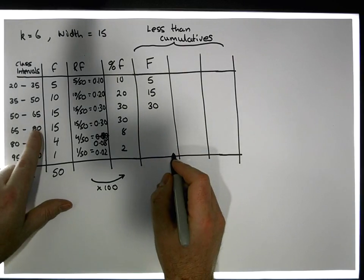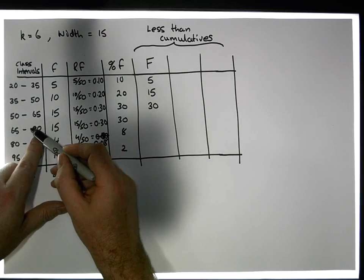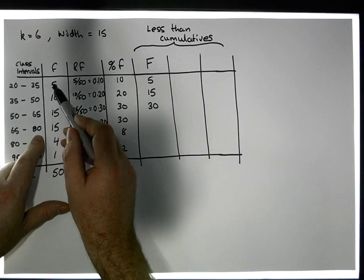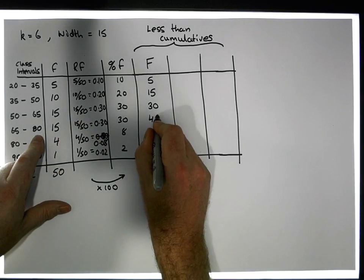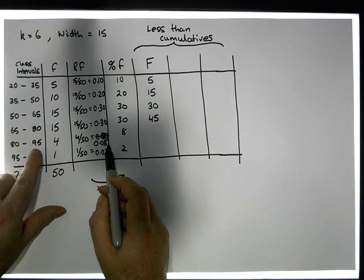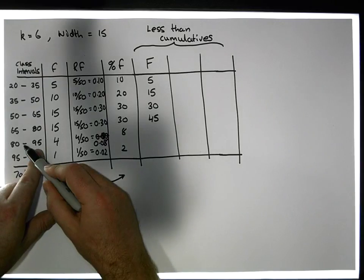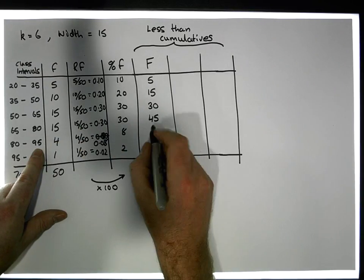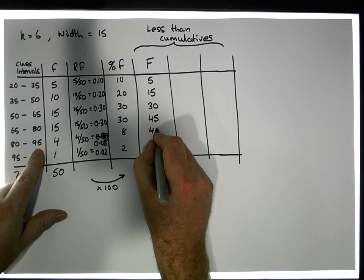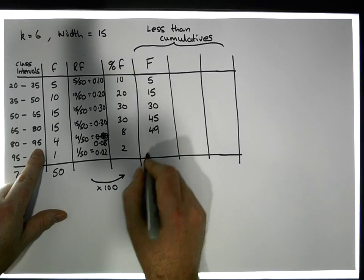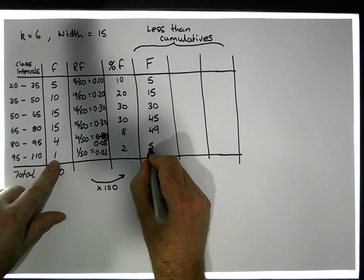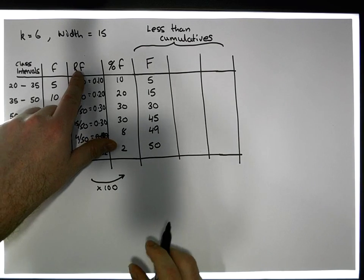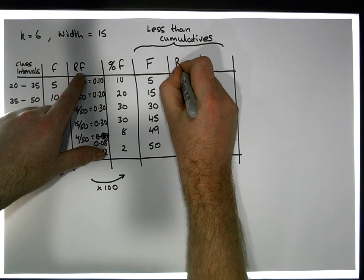How many are less than 80? Well, there's 15 in this class, 15 before it, 10 before that, and 5 before that, which gives us 45. How many are less than 95? There's 4 in this class and 45 in the accumulation of the classes before, giving us 49. And finally, all of the observations are less than 110.